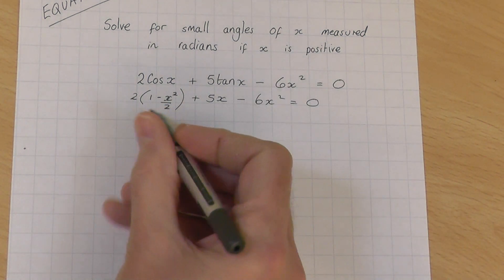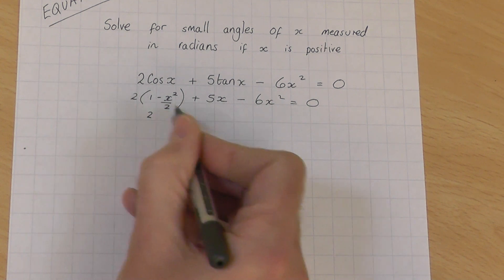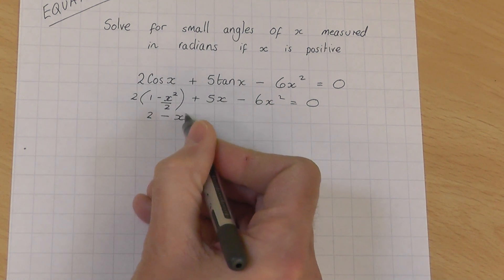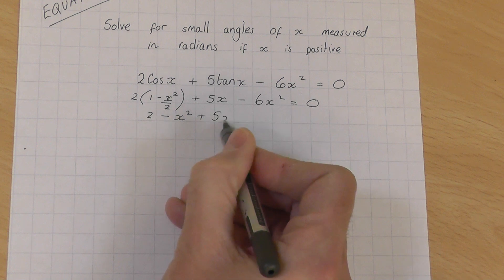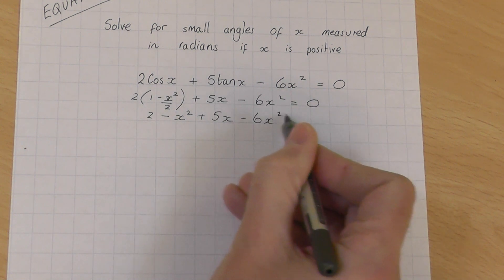If I expand out this bracket, you get 2 times 1 is 2, 2 times that, the 2's would cancel, so you get minus a single x squared plus 5x minus 6x squared equals 0.